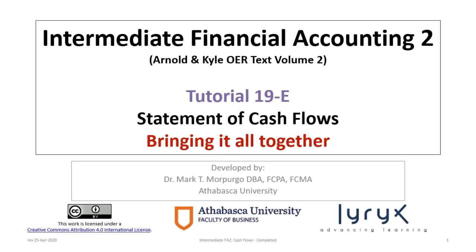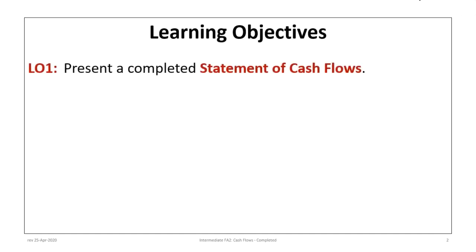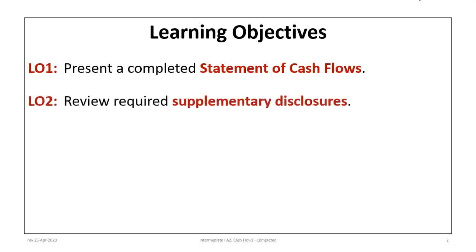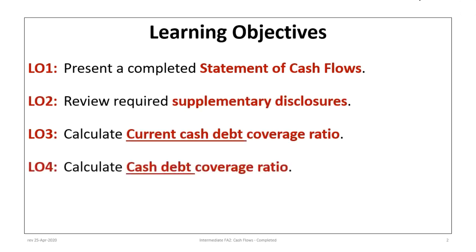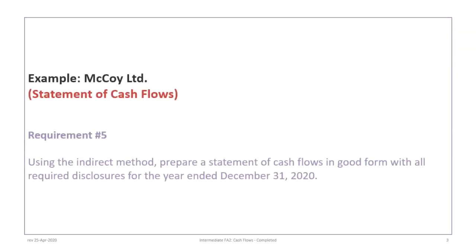Hello and welcome to Financial Accounting 2, Tutorial 19e. This is the last in a series of tutorials focused on preparing the statement of cash flows, bringing together all the work done in tutorials 19a through 19d. Learning objectives include presenting a completed statement of cash flows, reviewing supplementary disclosures, calculating the current cash debt coverage ratio, the cash debt coverage ratio, and free cash flow.